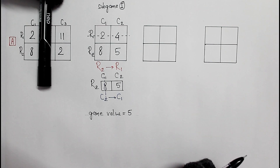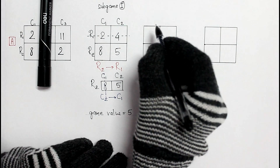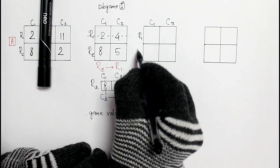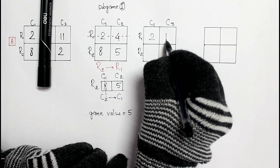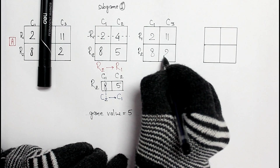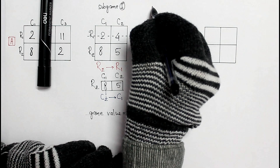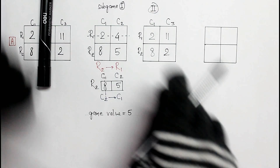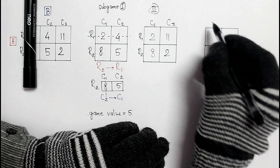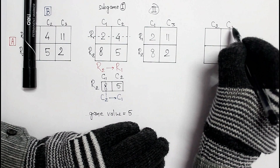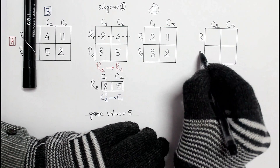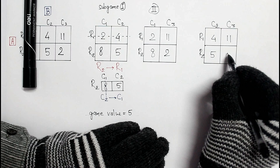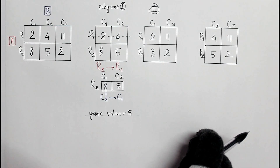Now we hide the second column and we have our sub game number 2. This is C1, C3, R1 and R2. Then hiding the first column gives us sub game number 3, with C2 and C3 visible while C1 is hidden.